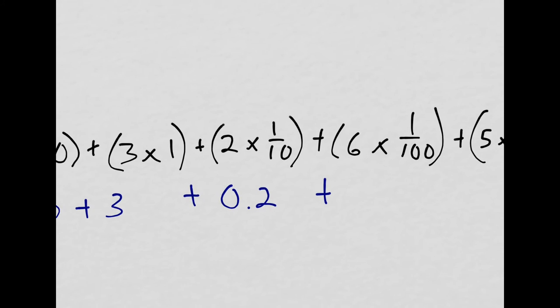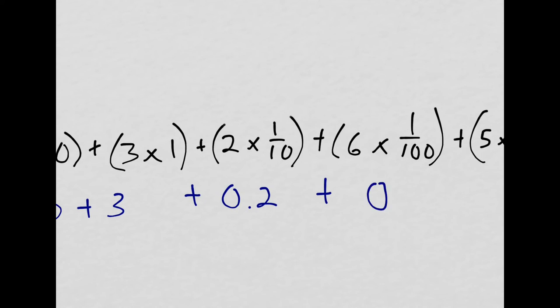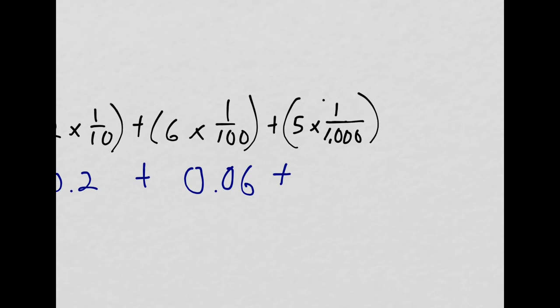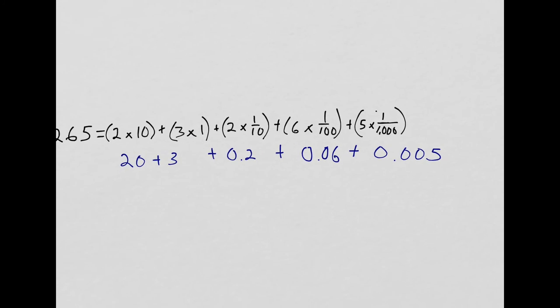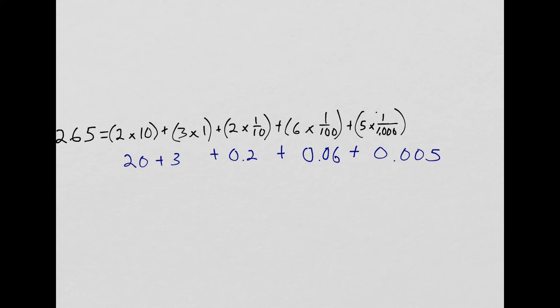Plus 6 hundredths, so that's 0.06. Plus 5 one-thousandths, so that is 0.005. Now if I look at this whole thing, really I only have one of these addends, one of these things that I'm adding together for each place value. So they're going to be fairly simple to add up.